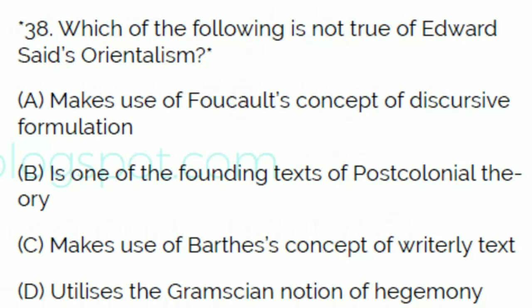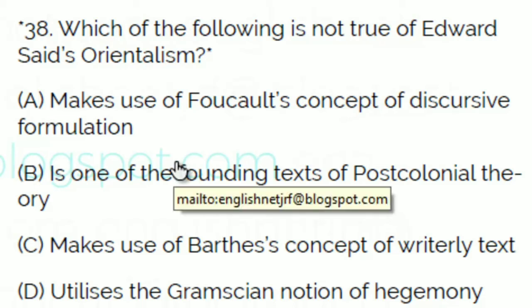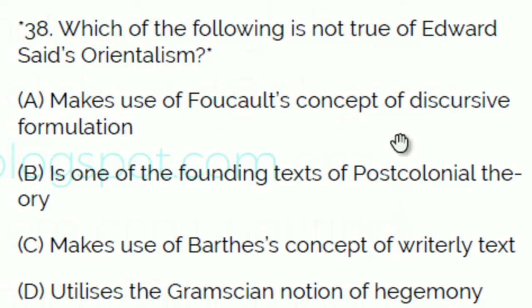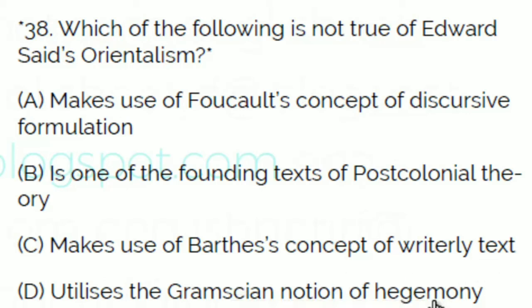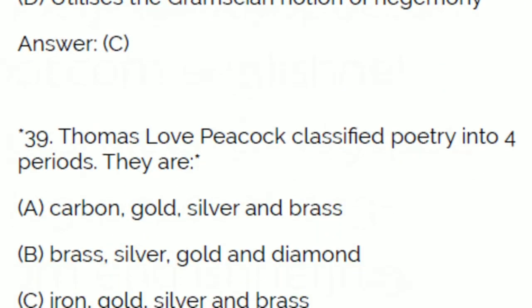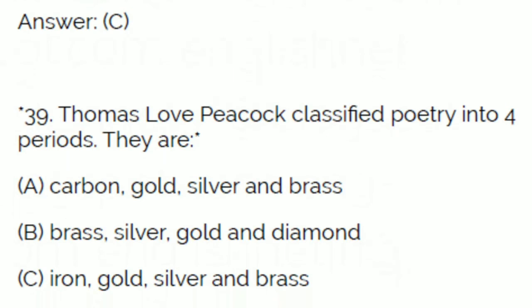Which of the following is not true about Edward Said's Orientalism? A: It makes use of Foucault's concept of discursive formulation. B: It is one of the founding texts of postcolonial theory. C: It makes use of Barthes' concept of the writerly text. D: It utilizes the Gramscian notion of hegemony. The answer is C — it makes use of Barthes' concept of the writerly text.